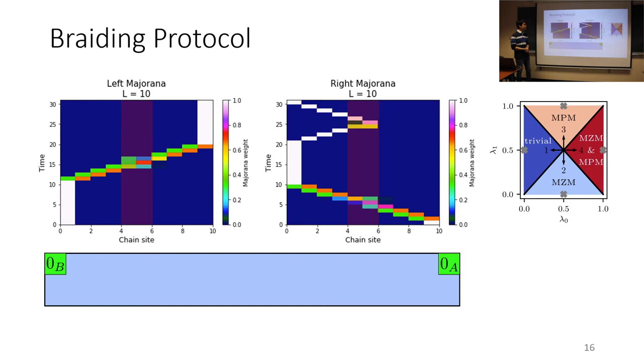So that basically completes the braiding protocol and there are ways to quantify how good or how bad the exchange is. The simplest way is to take the final Majorana edge states and to compare them to the initial edge states and see how much they differ.